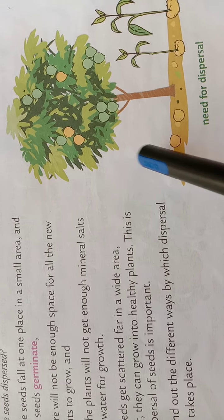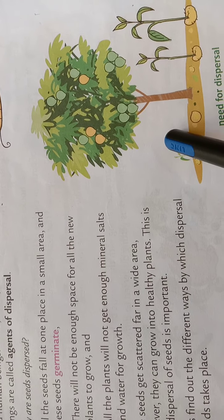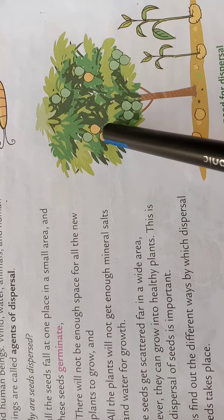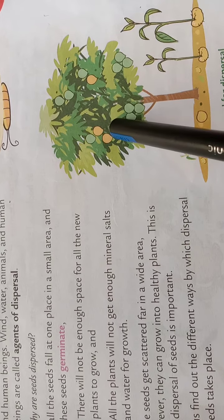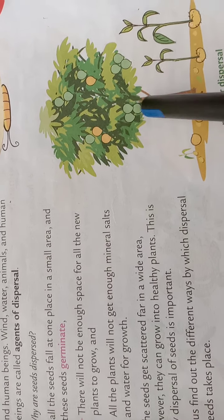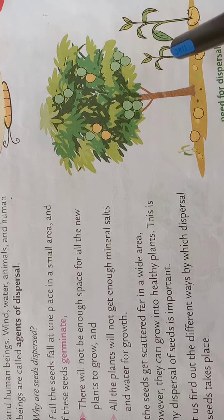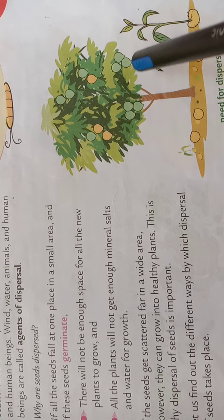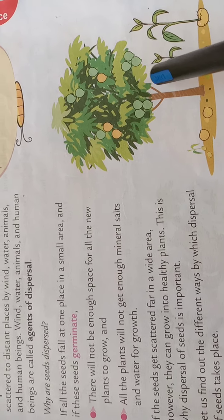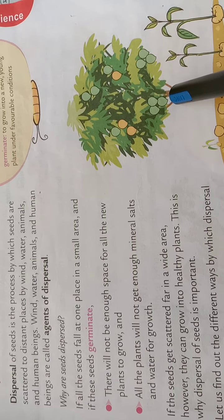Now students, you can see the picture — need for dispersal. In this picture you can see that the fruits of the trees are scattered to different places. Then they grow into new plants. That is what scattering to distant places means.